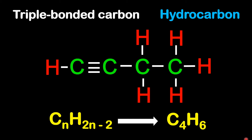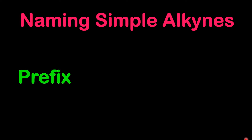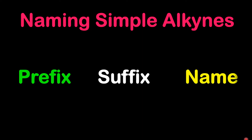Now we understand the concept, and you should be comfortable with this since we have done alkanes and alkenes before. Now let's name simple alkynes by thinking about the prefix, the suffix, and then joining them together to get the name.